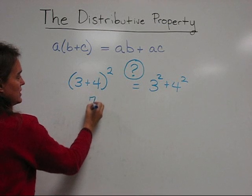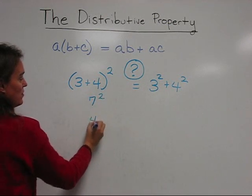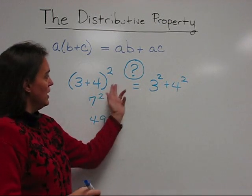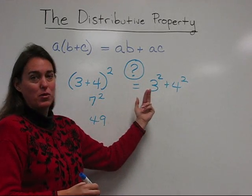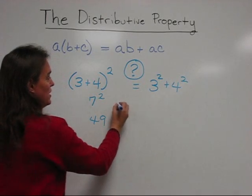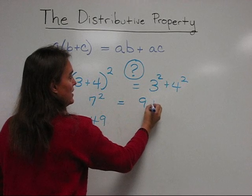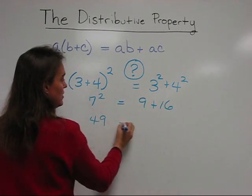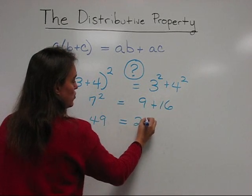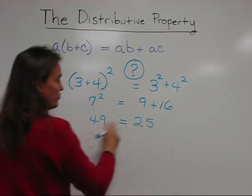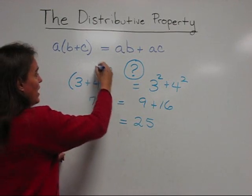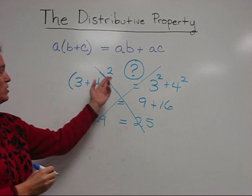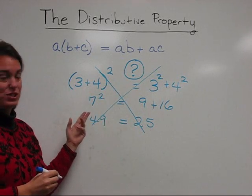3 plus 4 is 7. Squared is 7 times 7, which is 49. If we try to distribute that exponent through and try to give it to each one of these, we'll see that we have 9 plus 16. And when we add those, we get 25. 49 is not equal to 25. You cannot distribute an exponent over addition. You can distribute multiplication over addition.